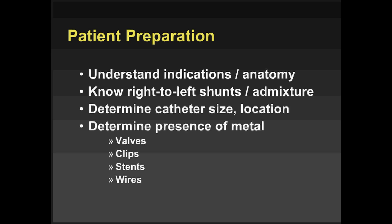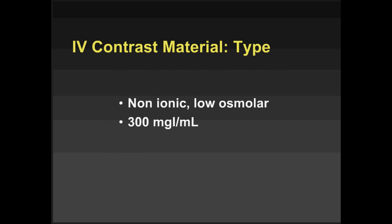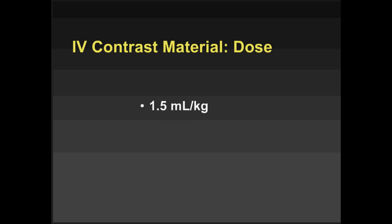You also need to know what potential artifacts from clips or wires are expected. For IV contrast material, we generally use non-ionic low-osmolar contrast at about 300 milligrams of iodine per milliliter, although 370 is a reasonable substitute. The dose is 1.5 mls per kilogram, which is beneficial because sometimes you need to give a second dose to opacify different parts of the cardiovascular anatomy. At three mls per kilogram total, you're still well below the cath lab threshold of about six cc's per kilogram.